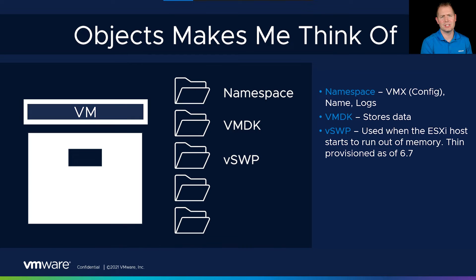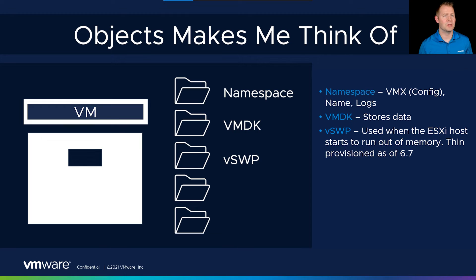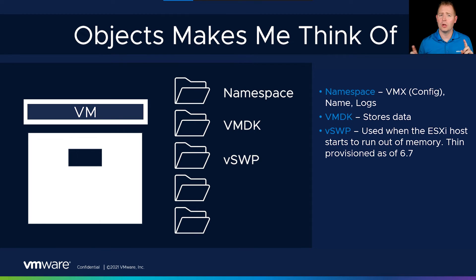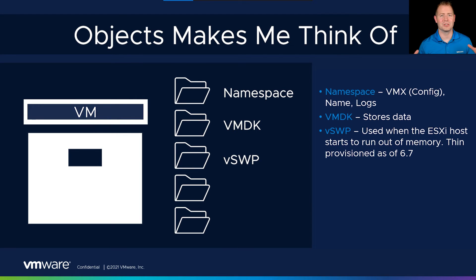For vSAN 6.2 and vSAN 6.6, this vSwap space used to be thick provisioned. So if we gave our VM 12 gigs of memory, we would create a corresponding 12-gig swap space for the ESXi host. A lot of customers came to us saying it was taking up all this extra storage in their environment. Starting with vSAN 6.7, we made it thin provisioned and grow it as needed — which is one of the reasons we talk about reserve space and slack space for our vSAN environment.